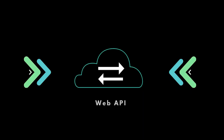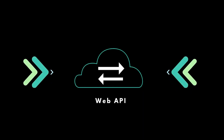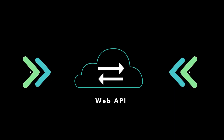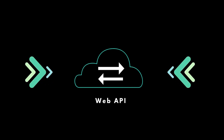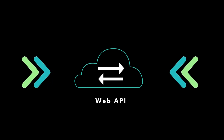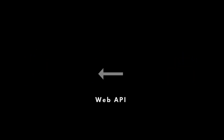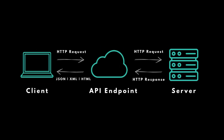Web APIs, on the other hand, are APIs designed for communication on the web and are typically based on HTTP protocols. They enable applications to interact with web-based services, access resources, and retrieve or manipulate data. Developers can access Web APIs by making HTTP requests to the API endpoints using different programming languages. The API will process the request, perform the necessary operations, and return a response, usually in a machine-readable format. This allows applications to leverage external services, integrate third-party platforms, or even build their own APIs to expose their functionality to other developers.